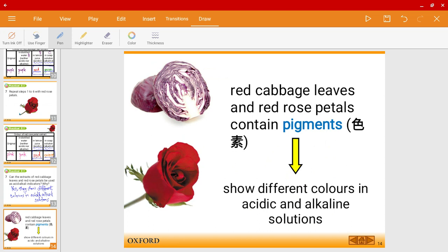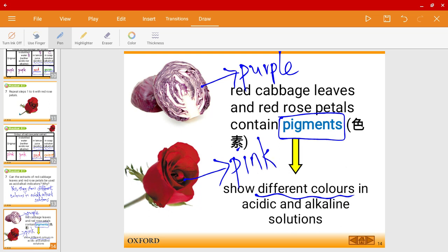So these cabbages, the cabbage leaves and red rose petals, they contain pigments, which shows the different colors in acid and alkaline solutions. The pigments, for example, in this one was a purple color in the red cabbage leaf. And in this case, for the red rose petal, it was a pink pigment. And these pigments allowed us to identify and to allow us to compare the colors in acidic and alkaline solutions.